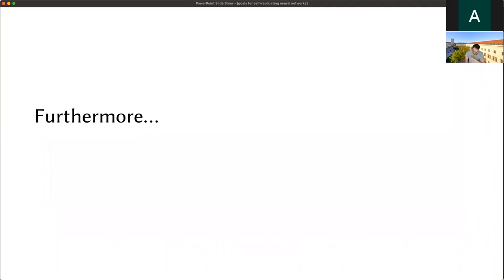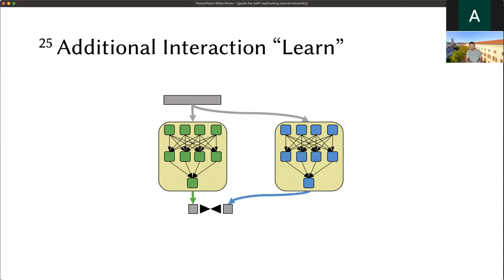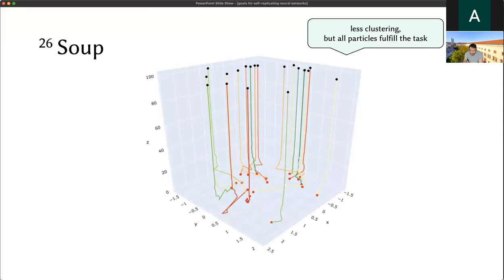There's one more thing to this research. We considered soups again. Additional to the interactions I showed you before where I input the weights of one particle of the soup into another one, we added an additional interaction called learn. In this case, two particles are fed with the same input, and for both the output is generated, but one of these networks, in this case the green network, might be trained to achieve the same output as the blue network. It's kind of like an imitation learning thing, so one network can learn from another network. At first this doesn't do so much. We still have very similar results. We observe less clustering than in previous experiments from the years before, but in the end all particles fulfill the task and are self-replicating. You can see there are lots of these particles spread within the weight space.